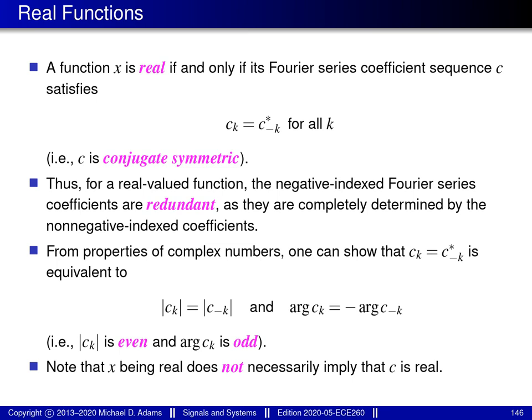The next property relates to real-valued functions. Recall that a Fourier series is a representation for periodic functions that are, in the most general case, complex valued. A real-valued function is a special case of a complex-valued function, so one might wonder if anything special happens when a real-valued function is represented with a Fourier series — for example, do the Fourier series coefficients have any special structure?